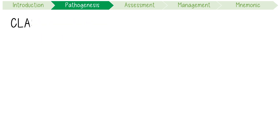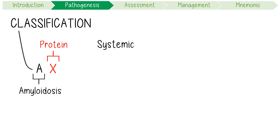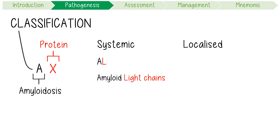When describing and classifying these conditions, the standard nomenclature for naming amyloidosis is AX, where A indicates amyloidosis and X is a representation of the protein present in the fibril. Let's go through two examples, highlighting the fact that these are classified as systemic or localized diseases. AL refers to amyloid composed of immunoglobulin light chain, and this condition arises from plasma cell disorders like myeloma.